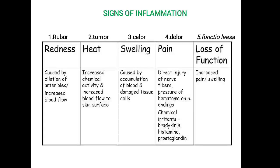The first sign is Rubor, which means redness. Redness is caused by dilation of arterioles and increased blood flow to the affected area. So when inflammation occurs, blood vessels dilate and we get redness.